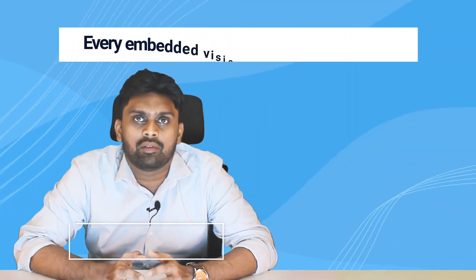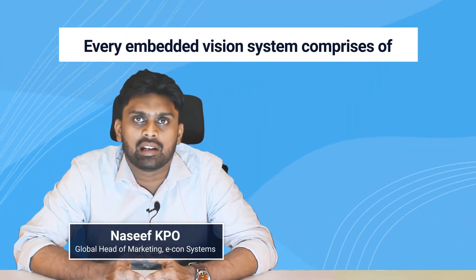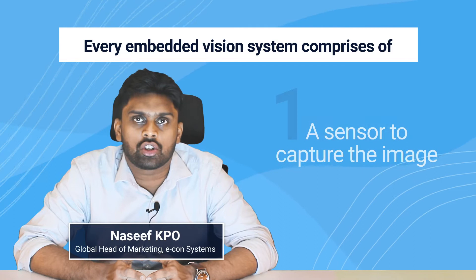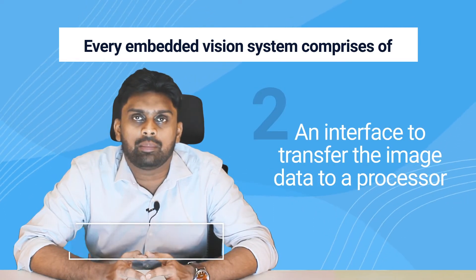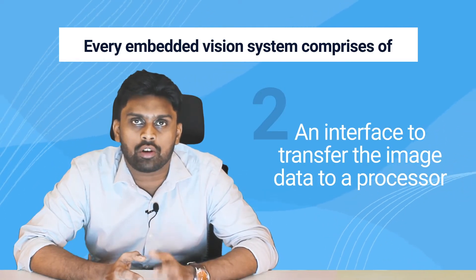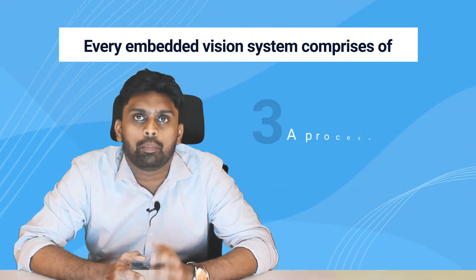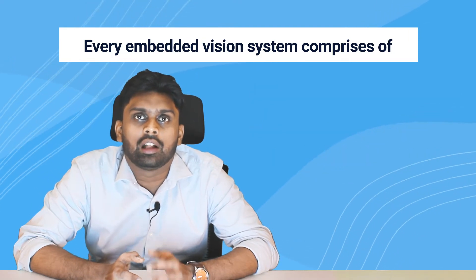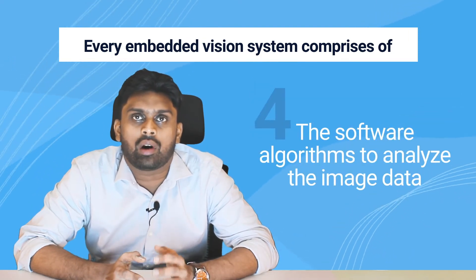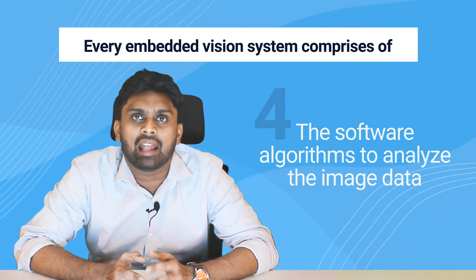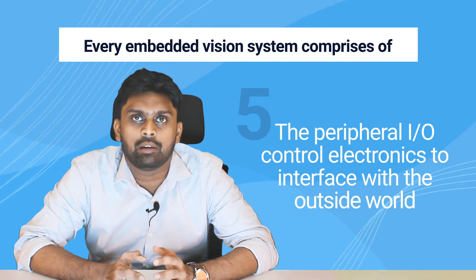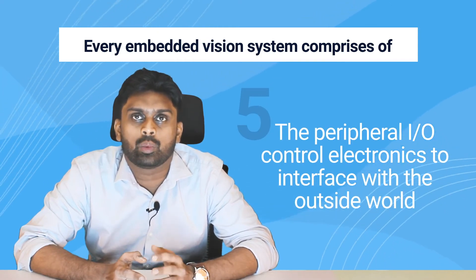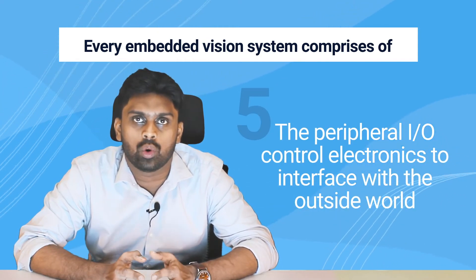Every embedded vision system comprises a sensor to capture the image, an interface to transfer the image data to a processor, a processor with associated memory management, the software to analyze image data, and the peripheral input-output control electronics to interface with the outside world.